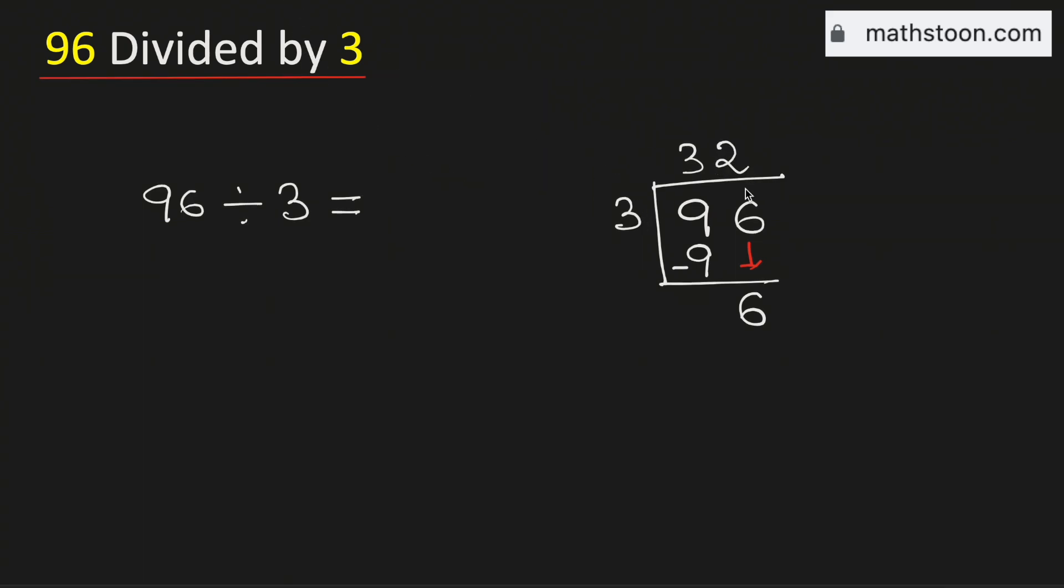Now 3 times 2 is 6. Subtract, we get 0. As there is no number to bring down here and we have got the number 0, we will stop. Therefore, 96 divided by 3 is equal to 32, and this is our final answer. Thank you for watching.